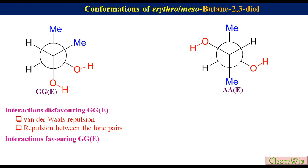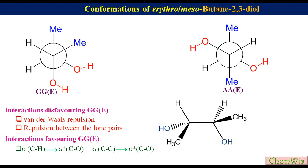There are two important stabilizing interactions that favor the GGE conformation. The first is an attractive interaction between the C–H bonding sigma orbital and the sigma-star antibonding C–O orbital. A similar interaction exists between the C–C sigma bonding orbital and the C–O sigma-star antibonding orbitals. To understand this stabilizing interaction, let's draw the flying wedge formula of the GGE conformation.